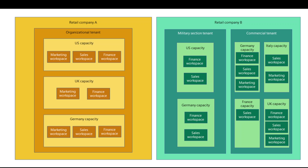In comparison, if you look at Company B, it has a multi-tenant architecture. If you look at the comparison that has been built, within an organization like Company A, you have something called capacity, and within capacity, you have workspaces.